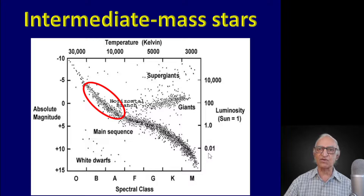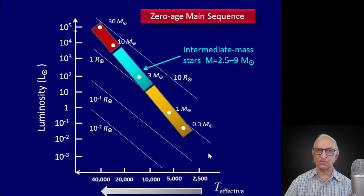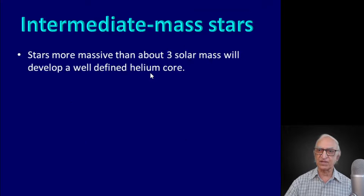Now let us get on with our discussion of the intermediate mass stars, which is the topic of today's lecture. More or less, it will be along the same lines as the lower mass stars, but with one or two essential differences. We are going to discuss stars in this region — say, three solar mass stars, just to be specific.